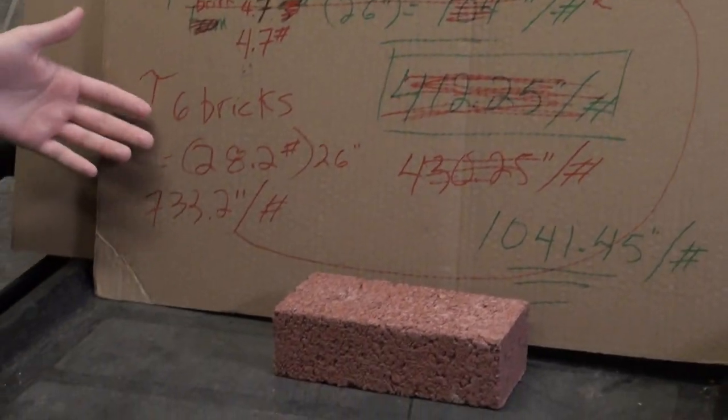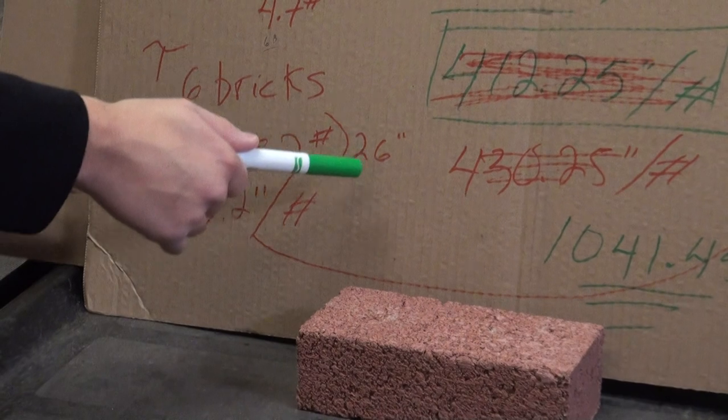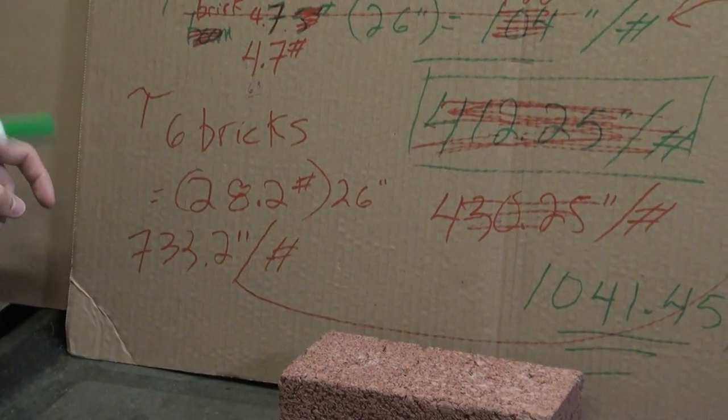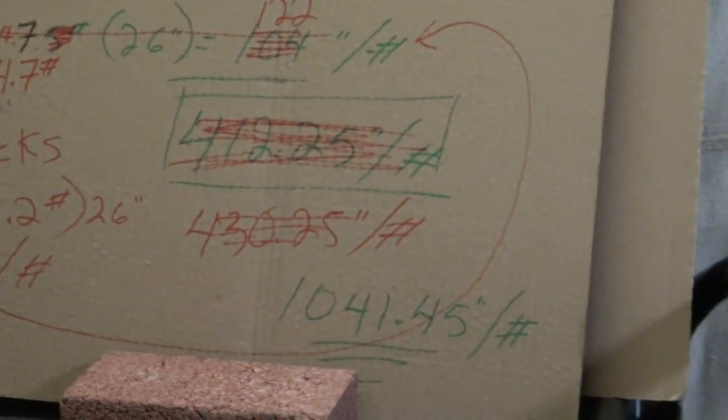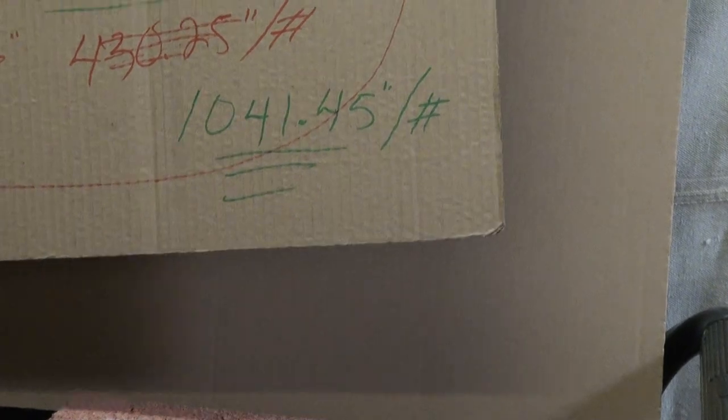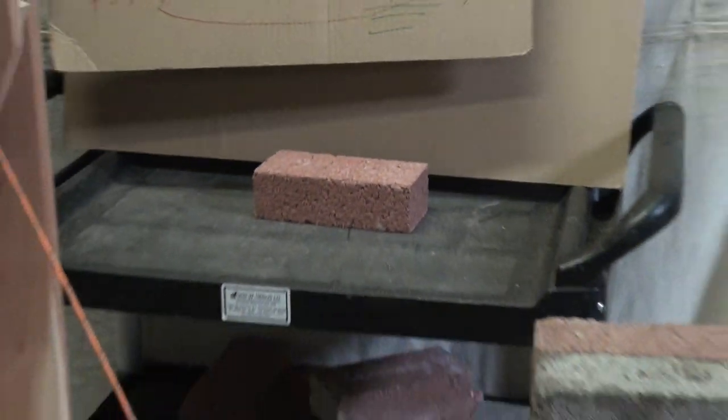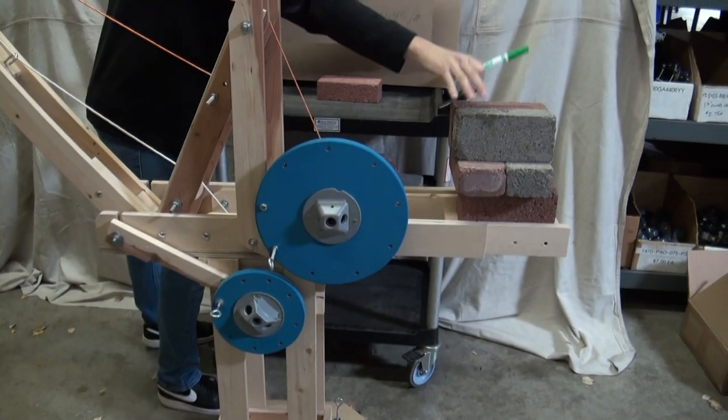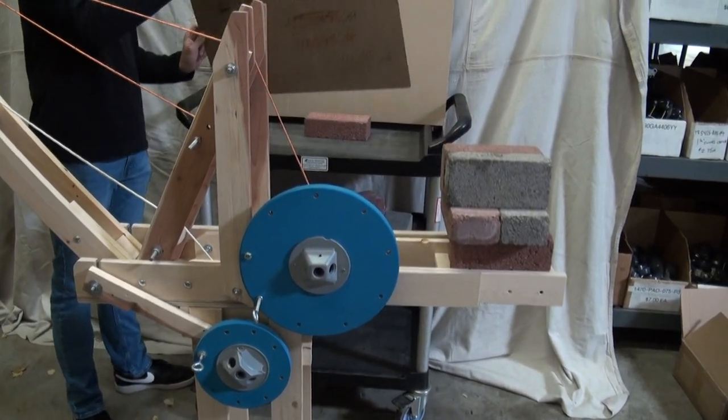Now we go to our six bricks which is weight times distance again, and that gets us 733.2 inch pounds of torque. And add them together we get 1041.45 inch pounds of torque. So that is the total torque for this side of the crane which is the body and the counterweight.